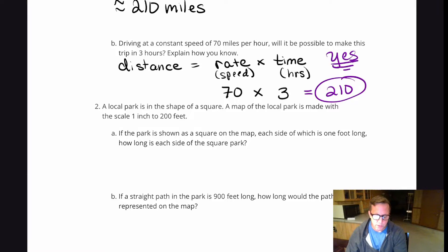Alright, for number two, a local park is in the shape of a square. A map of the local park is made with a scale that says one inch is equivalent to 200 feet. So if the park is shown as a square on the map, each side of which is one foot long, how long is each side of the square park?